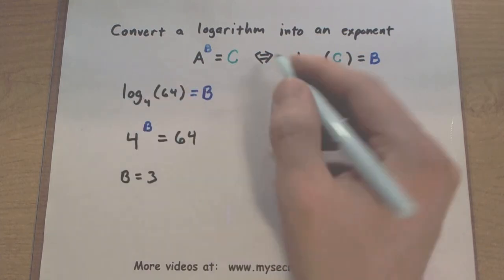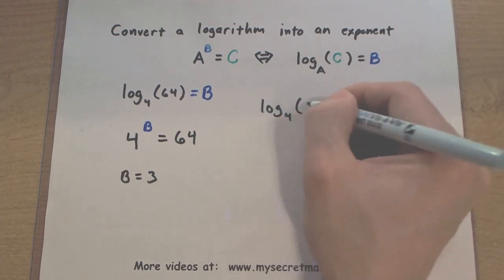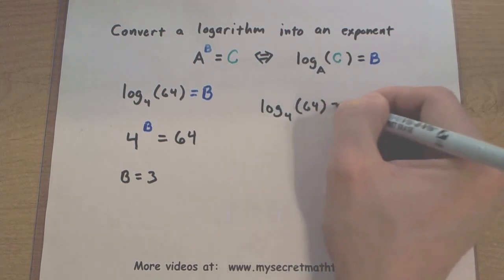Now that will allow me to go back up to my logarithm and say, okay, I know what that logarithm is. Log base 4 of 64 is equal to 3.